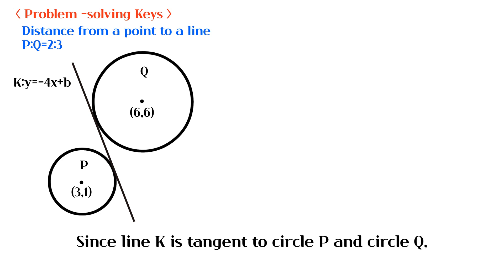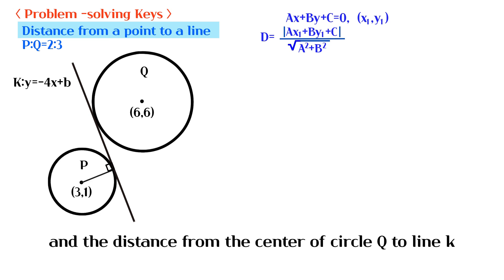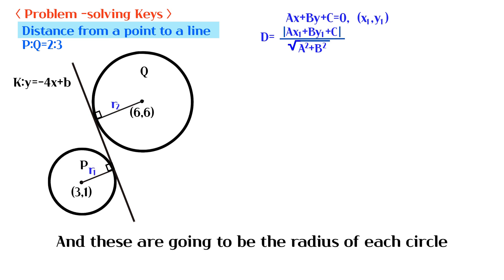Since line K is tangent to circle P and circle Q, we can find the distance from the center of circle P to line K, and the distance from the center of circle Q to line K. And these are going to be the radius of each circle.